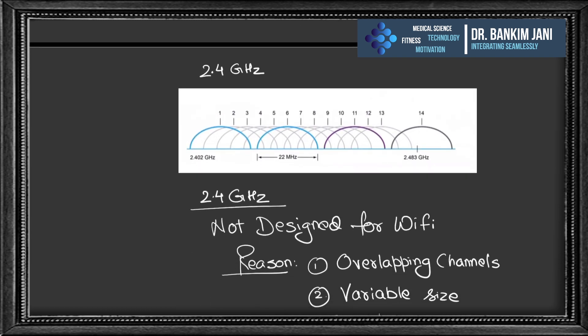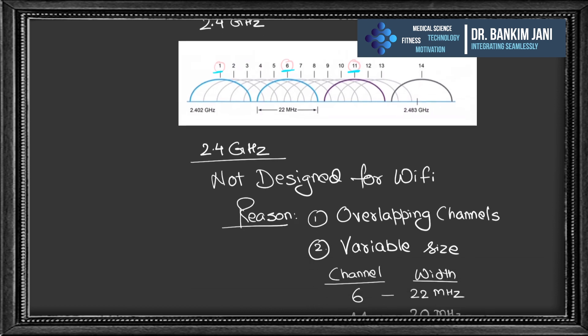Looking specifically at 2.4 GHz: this band was never designed for Wi-Fi. There are channels but all of them overlap. In practice, we can only use three non-overlapping channels: channel 1, channel 6, and channel 11. The rest overlap each other, so 2.4 GHz has very limited scope.